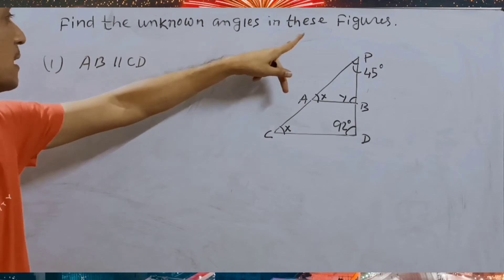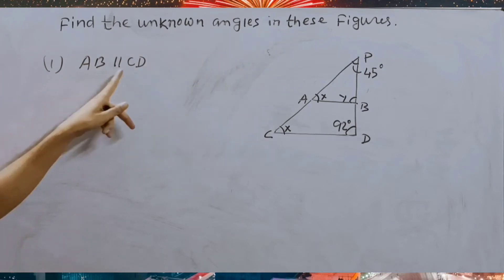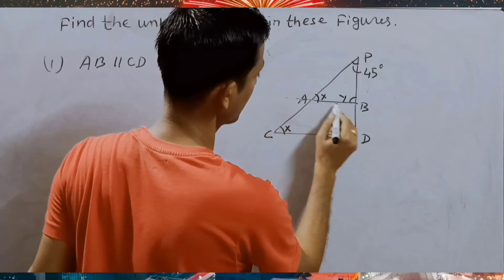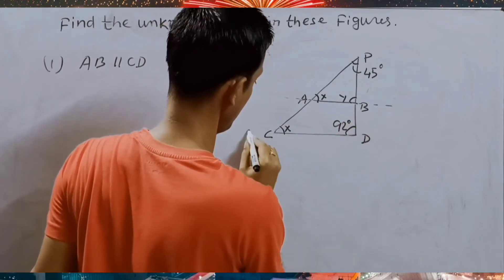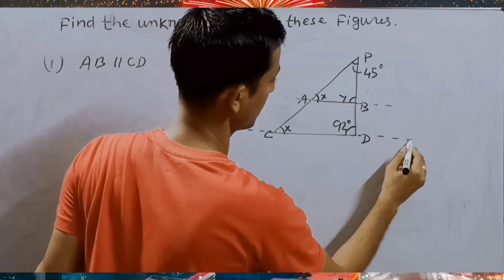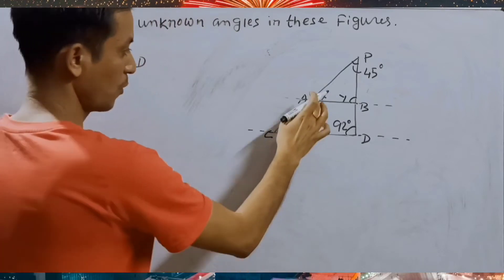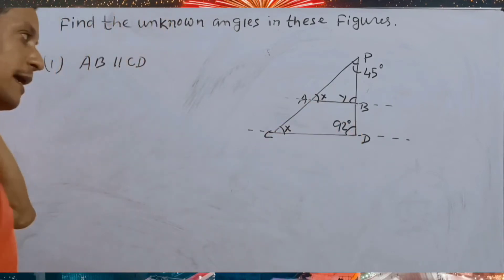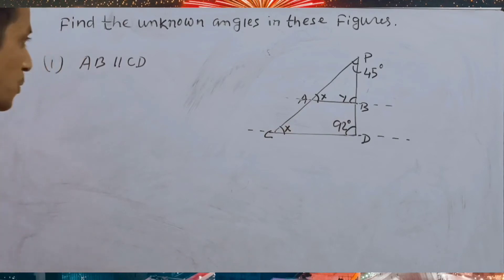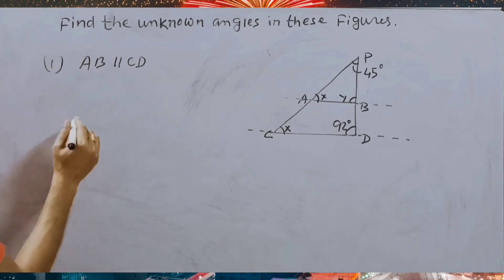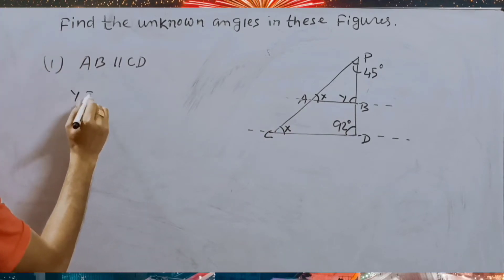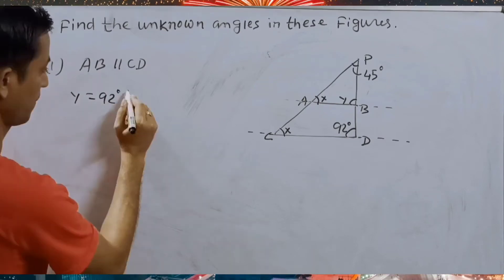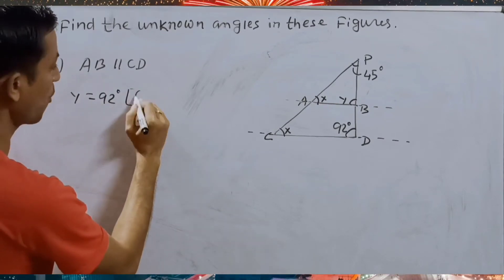Find unknown angles in the figures where AB is parallel to CD. Since AB is parallel to CD, we have two corresponding angles. X is equal to Y, which is 92 degrees. So Y is equal to 92 degrees, as corresponding angles are equal.